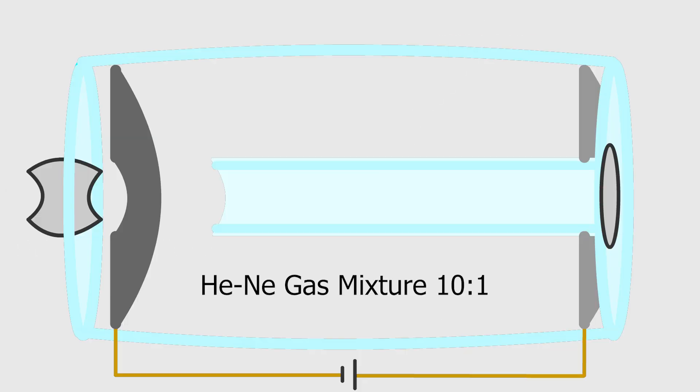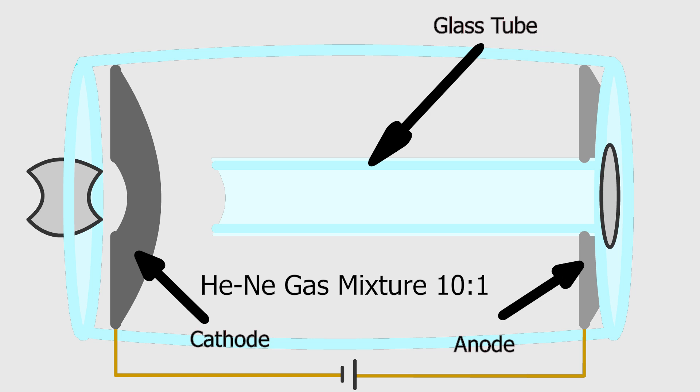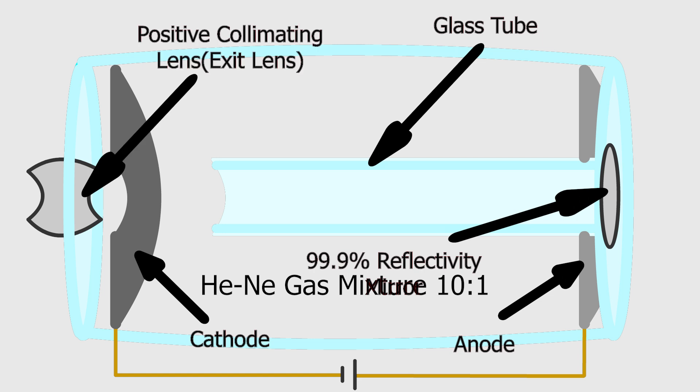The helium-neon laser is a complex physical system designed to provide high precision and stability. The operation of this laser source relies on the harmonious functioning of various components. These components not only enable the fundamental working principles of the laser, but also directly impact its efficiency and success in various applications. The main components of the helium-neon laser are as follows.